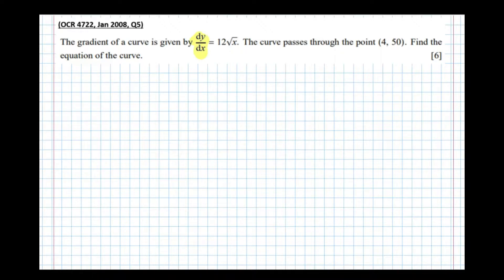The gradient of a curve is given by dy/dx equals 12 root x. The curve passes through the point (4, 50). Find the equation of the curve.